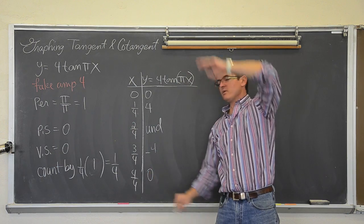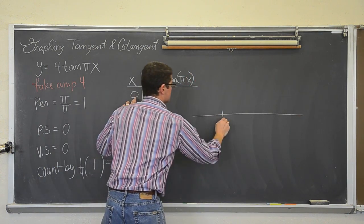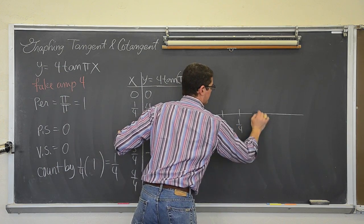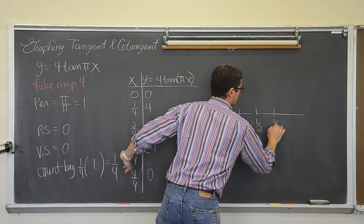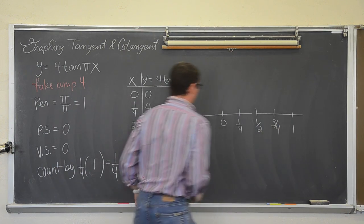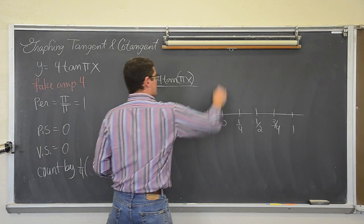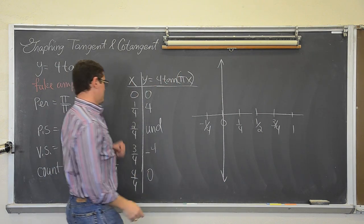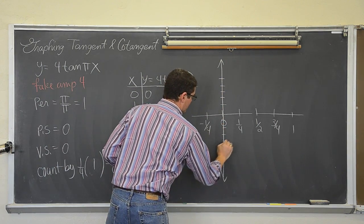And then we are going to have zero again when we plug in 1. So our x-axis values are: 0, 1/4, 1/2, 3/4, and 4/4 — or simply 1. We can also go to negative 1/4. Draw your y-axis through where zero is. We have y values from negative five to positive five.